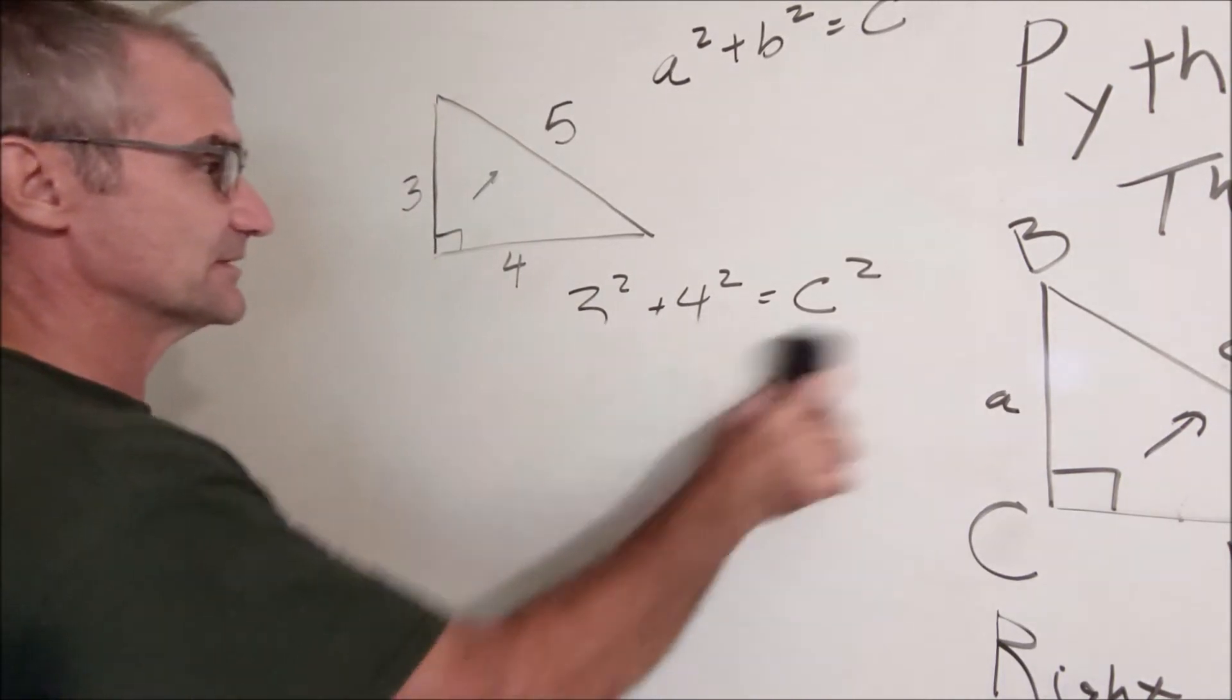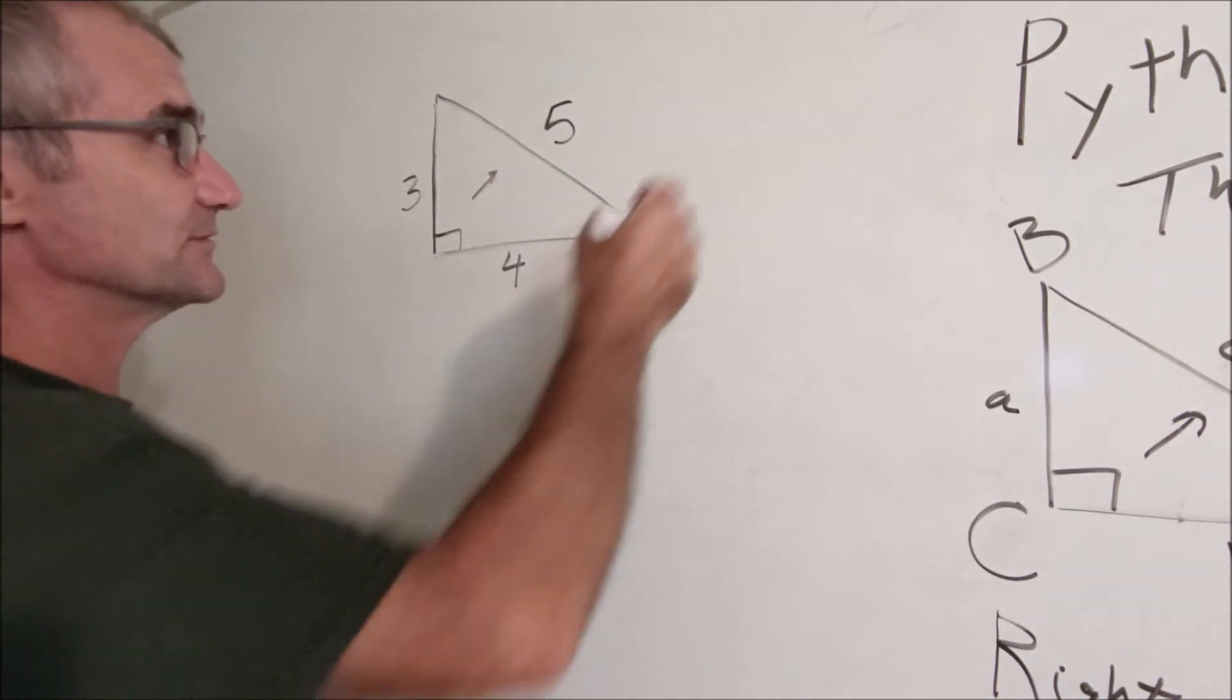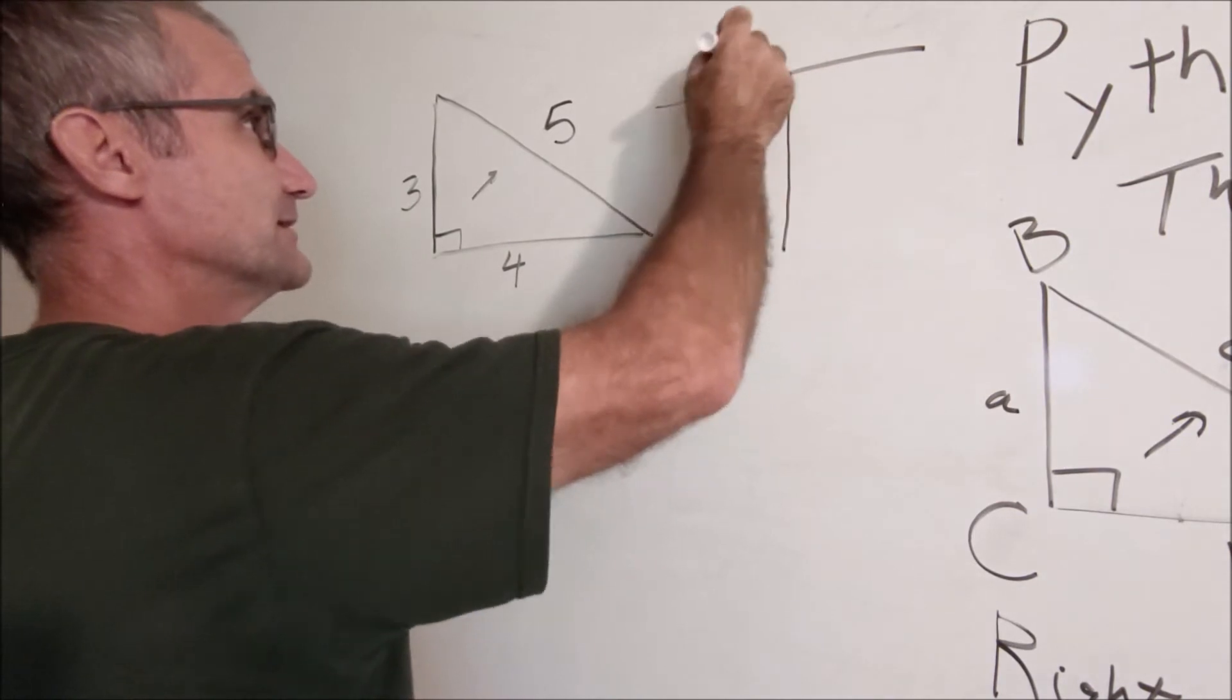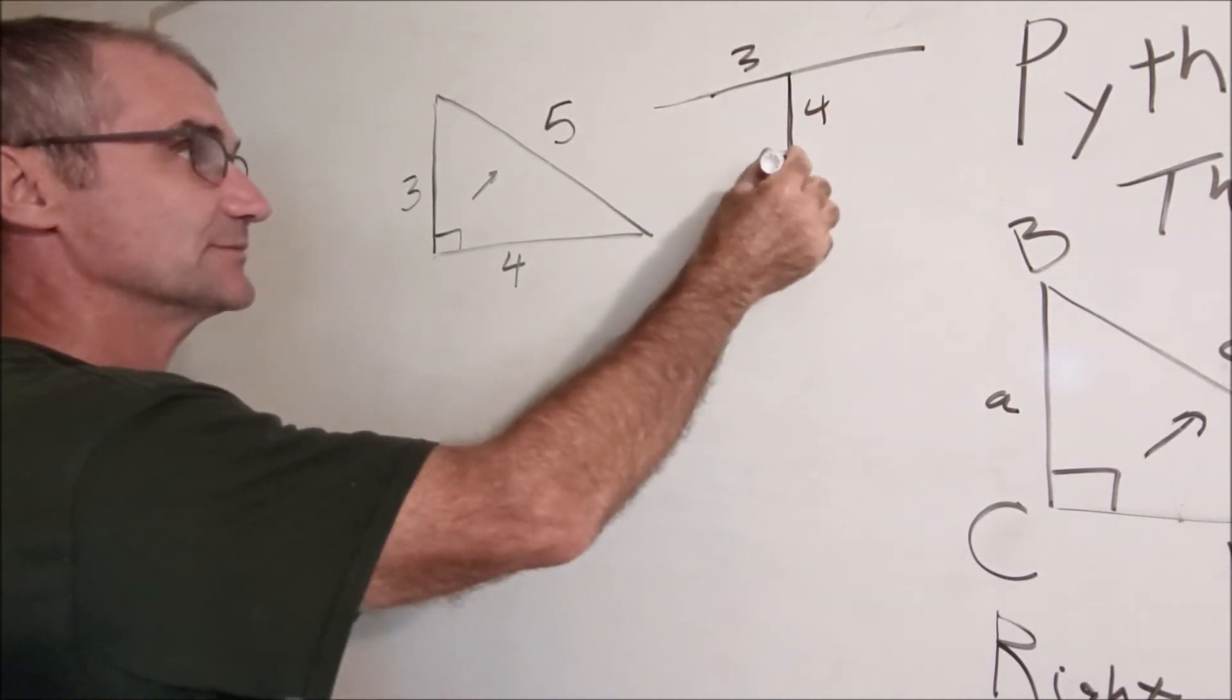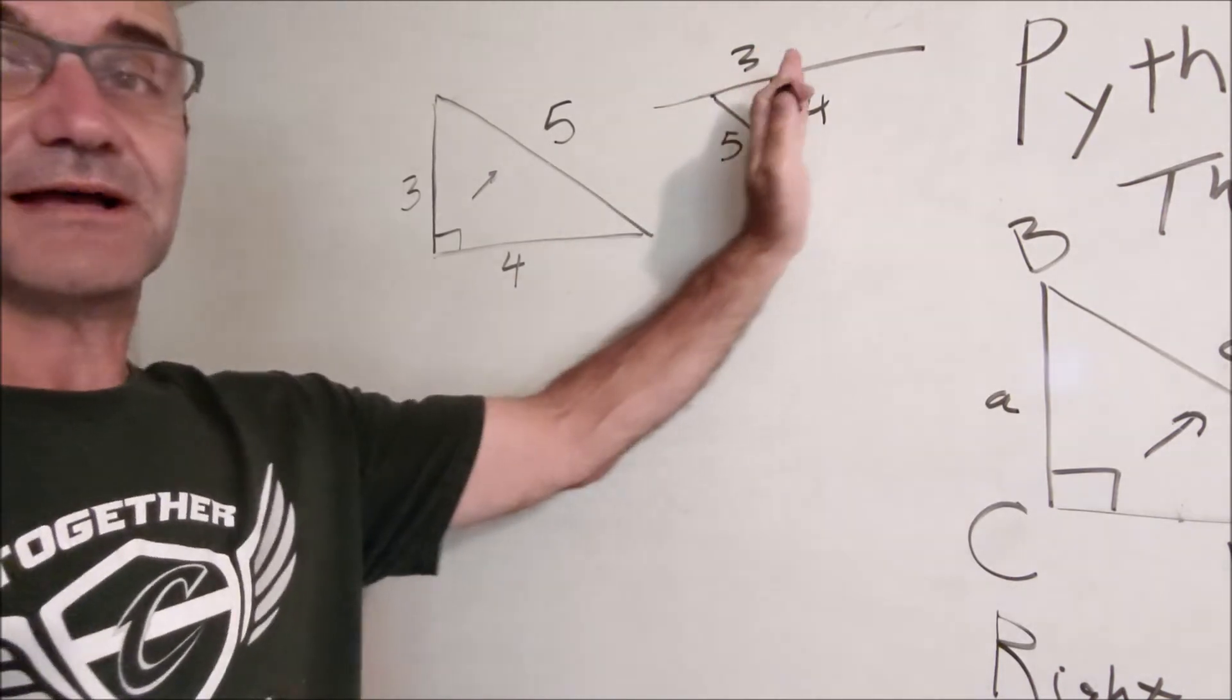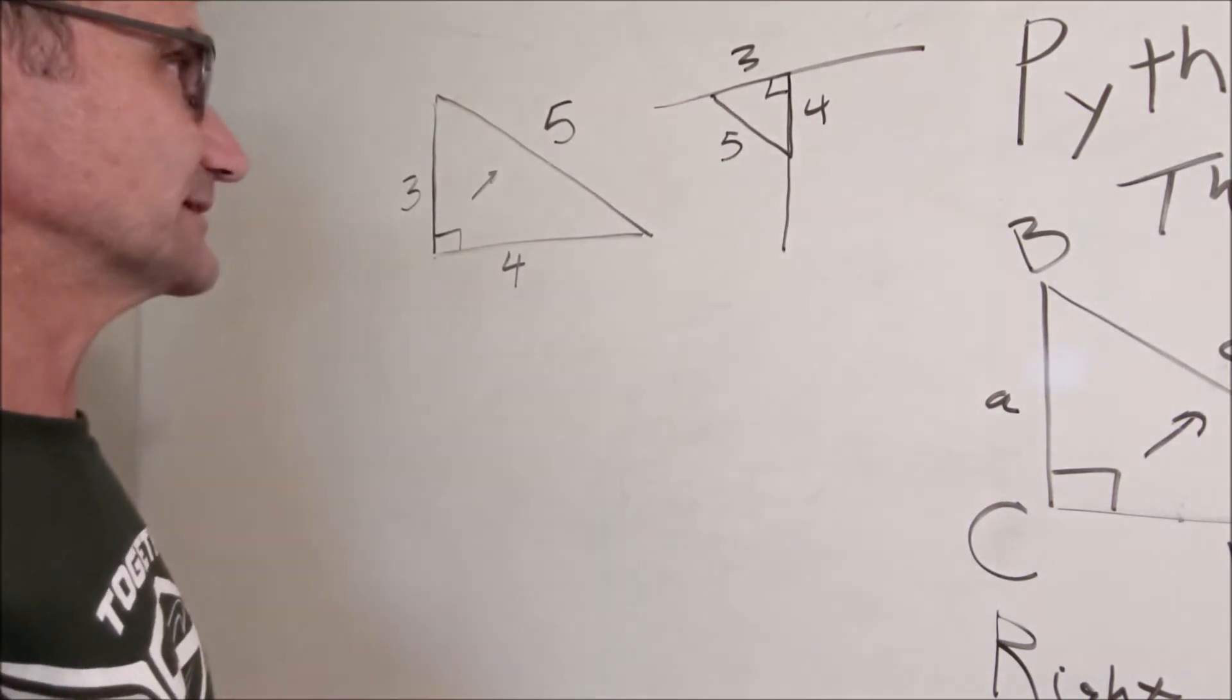A three, four, five triangle is the Pythagorean triple. Three squared plus four squared equals five squared. So if you're trying to build a fence perpendicular to a house and you measure three feet down this way, four feet down this way, and you pull a diagonal tape or string and this is five, well then this has to be right. So you can move this line back and forth with your three mark and four mark until you get five, and that's how you know it's a right angle or perpendicular.